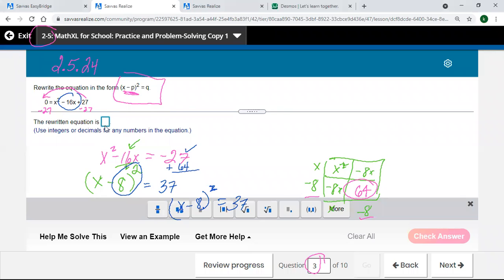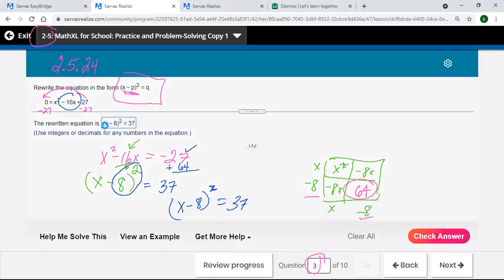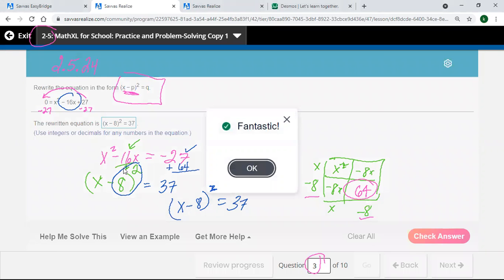Shift 6 for a carat and a squared up there, arrow to the right to get out of the exponent, equals and a 37. Let's see if it likes it. Fantastic, that's all we're doing here.